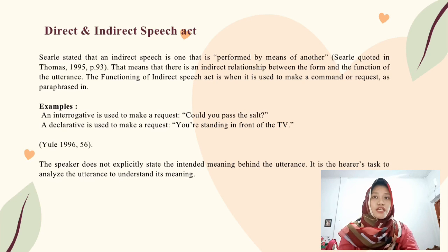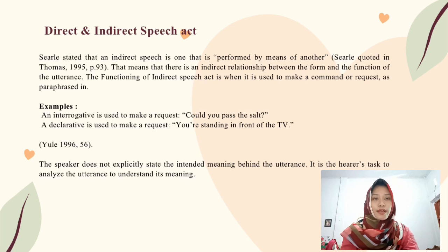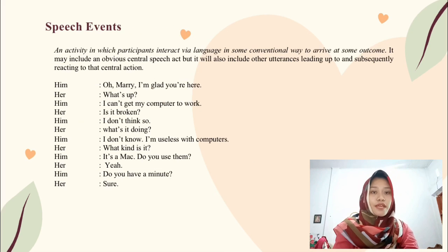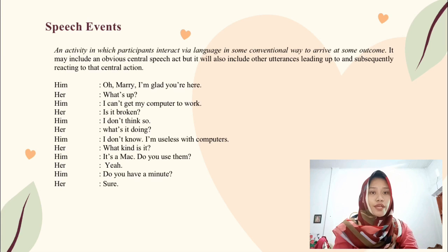Indirect speech act is performed by means of another form — that means there is an indirect relationship between the form and the function of the utterance. The function of indirect speech act is when it is used to make a comment or request as paraphrase. For example, interrogative used to make a request: 'Could you pass the salt?' And declarative used to make a request: 'You are standing in front of the TV.' Speech events are situations in which participants interact via language in some conventional way to arrive at some outcome. It might include an obvious central speech act, but it will also include other utterances leading up to and subsequently reacting to that central action.